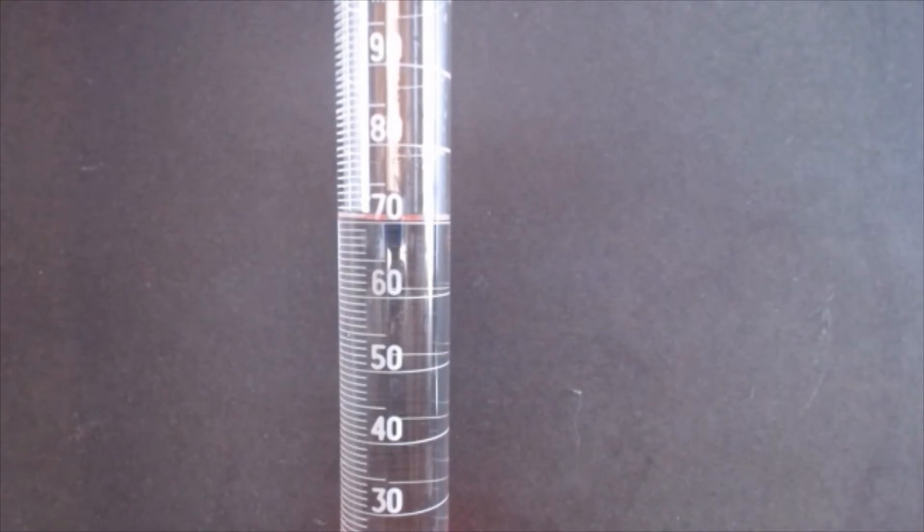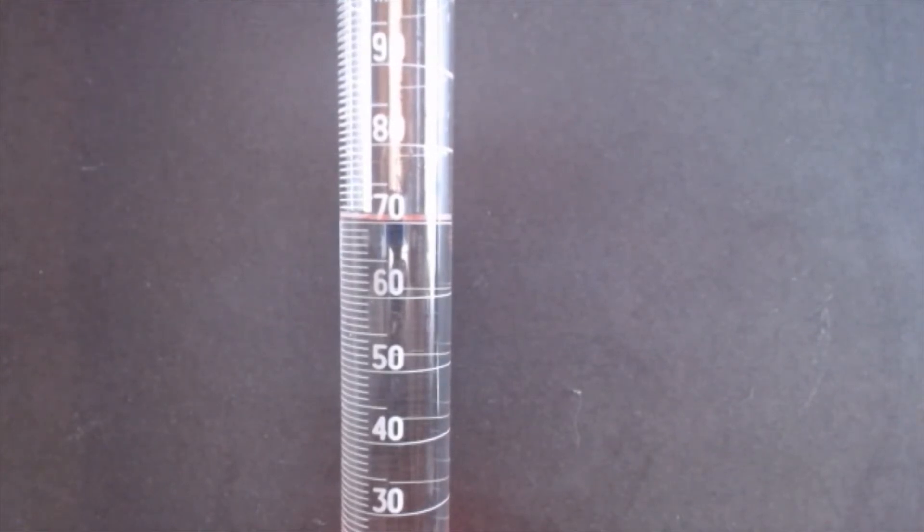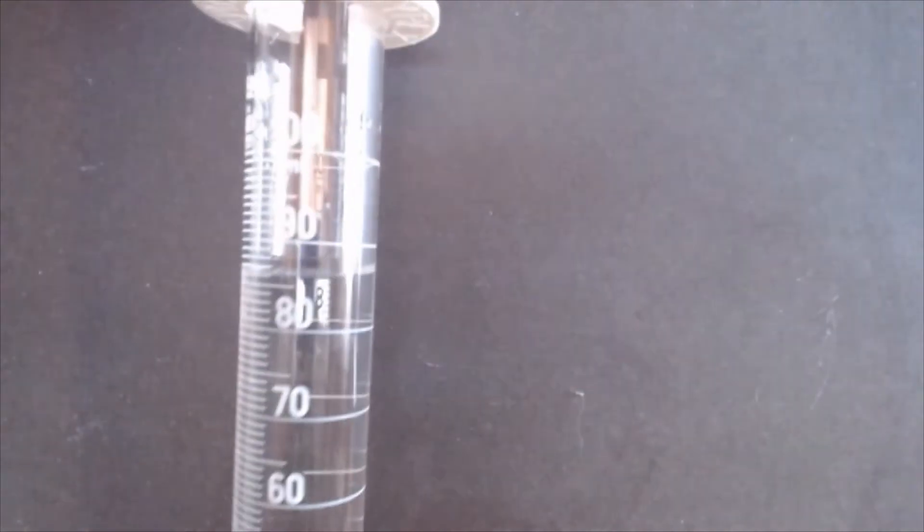So now what I need to do is add my silicon pieces, and then we'll find the difference in volume. So hopefully you can see I've added my silicon pieces. They're inside my graduated cylinder. So I'm going to try and adjust this into the camera view so that you guys can make a reading.